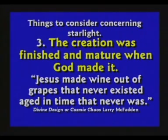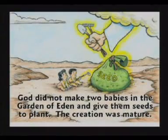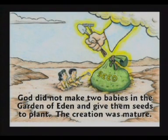Number three: the creation was finished when God made it. Jesus made wine out of grapes that never existed, turned water straight to wine. He can make a full-grown man out of dirt, a woman out of his rib, and animals out of dirt. He can make the earth out of nothing and feed 5,000 people out of a little boy's sack lunch. God didn't make two babies and put them in the Garden of Eden with a package of seeds. He made a full-grown man and a full-grown woman in a full-grown garden — that's the only way it works. Number four: a light year is a distance, not a time. It's the distance light can travel in a year at today's speed. A light year could be done in one second if you speeded the light up.